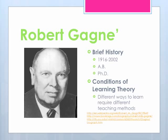While Gagne worked with the military, he discovered that instruction was not suitable for the necessity of what needed to be taught. So he started to study principles related to positive instruction and came up with the Conditions of Learning Theory. This theory basically states that there are different types of learning and different types of instruction are needed for each learning style.